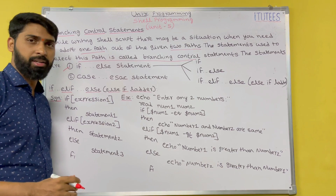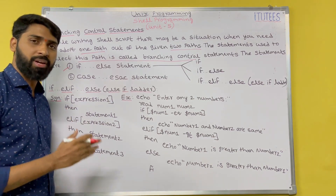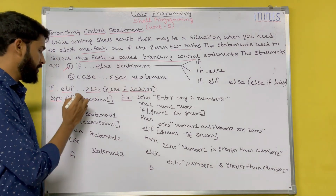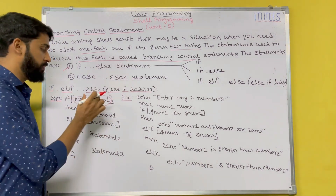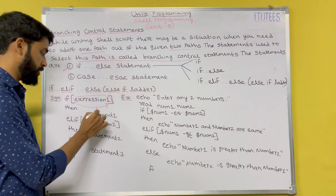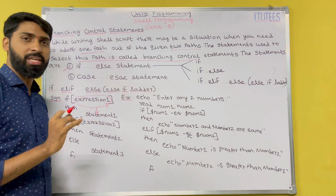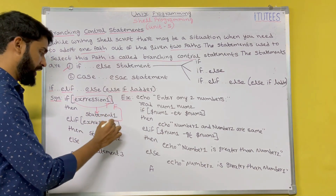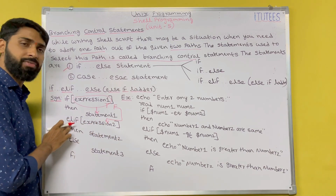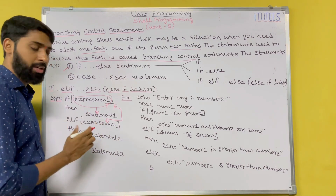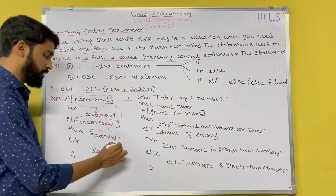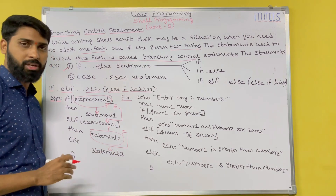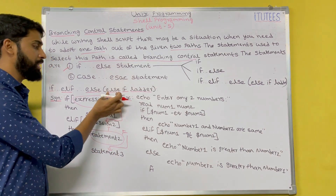Now we see the else-if ladder, where you write another condition in the else block. If the first expression is true, we enter that block and execute statement 1. If the first condition is false, we check another condition written in the else-if statement. If that condition is true, we execute statement 2. If it is also false, we execute statement 3. This structure is called the else-if ladder.